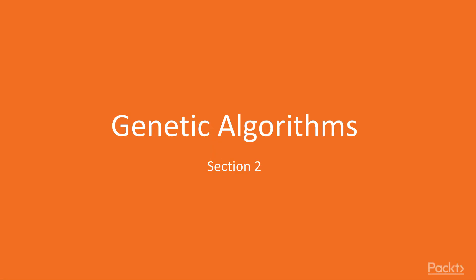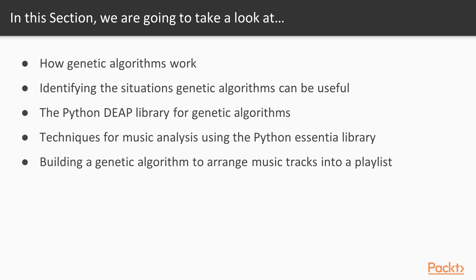Hello. In this section, we'll work with genetic algorithms to develop a music mixtape. We're going to begin by looking at how genetic algorithms work and identify those situations in which they are useful. Then we'll show the Python deep library and talk about how it can be used to build a genetic algorithm. Next, we'll transition to focusing on the mixtape project by first looking at how to extract features from music using the Python Essentia library. Then we'll devise a genetic algorithm that uses these features to arrange tracks into a playlist.